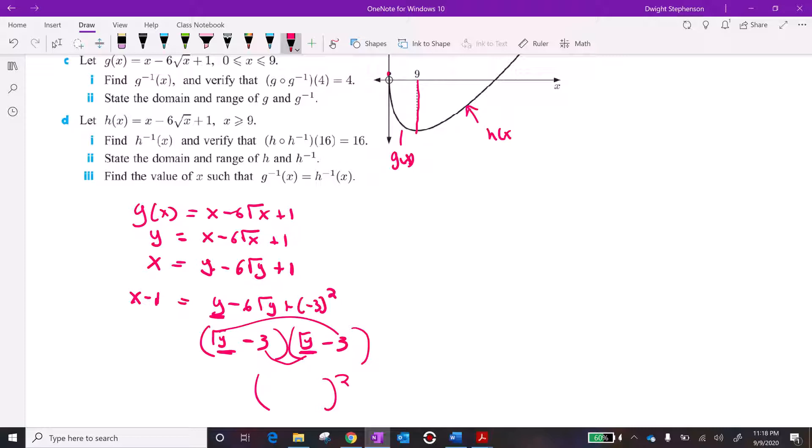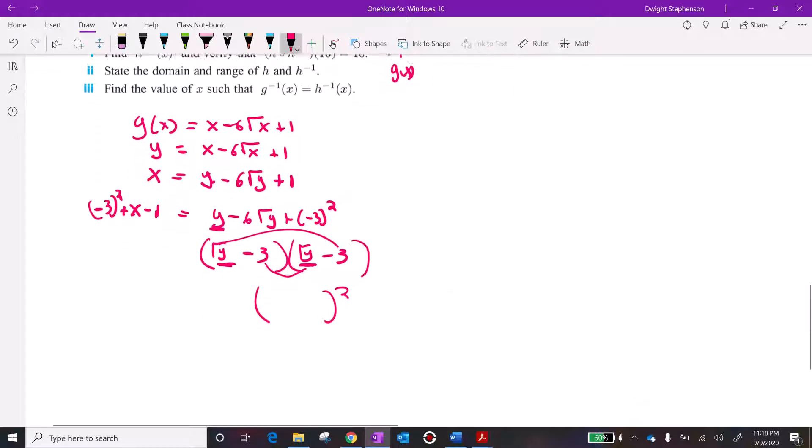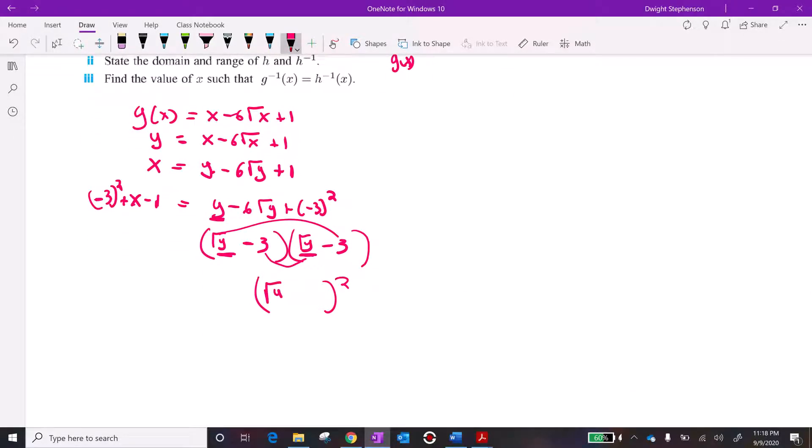So it's going to be minus 3, minus 3. And you can check, if you FOIL this out, if you distribute these, you're going to get this top expression. I'm not just allowed to add 9 to one side. Whatever I do to one side, I've got to do to both sides. So we're going to add it to this side as well. That maintains the balance. And basically what this factors out to be is square root of y minus 3 squared. And the right-hand side is going to be x plus 8.